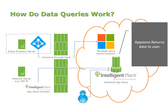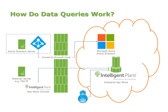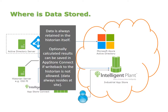The App Store returns the data to the user. This data is not stored at all in the cloud — we're really just forwarding requests and forwarding responses back. That's one of the key differences with the Intelligent Plant App Store: we do not need to copy your data. We just create routes that are secured to allow that data to be exposed to the right people. We always retain data in the Historian itself — we're not copying it into the cloud, we're just allowing people to query it.